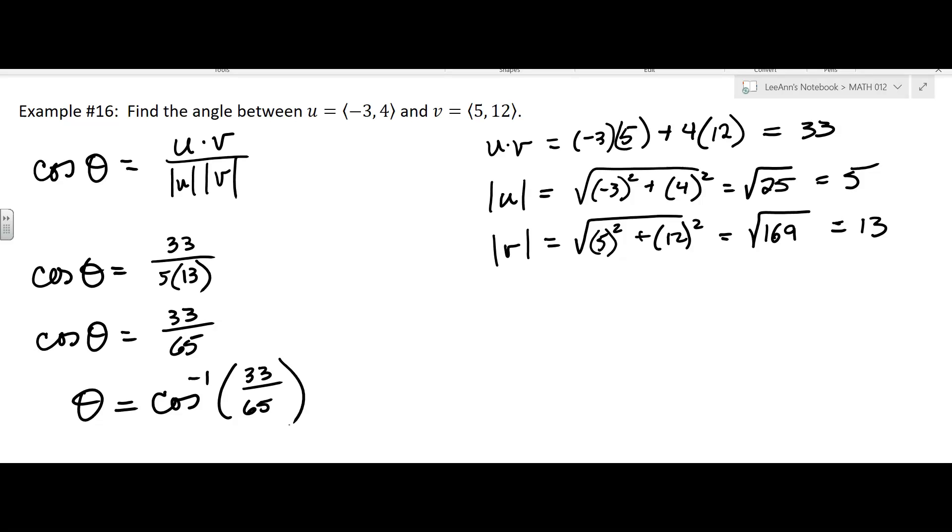Let's see, inverse cosine 33 divided by 65, and it's about 59.5 degrees.